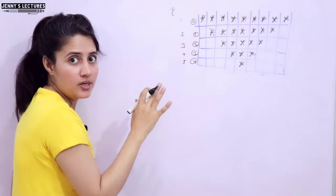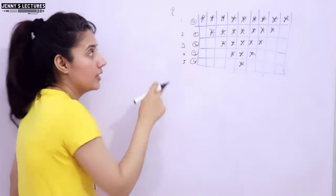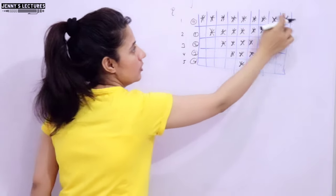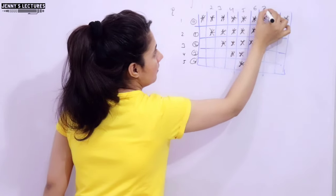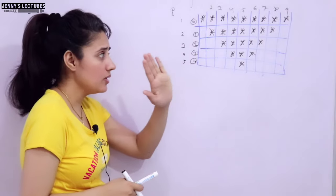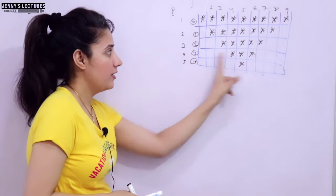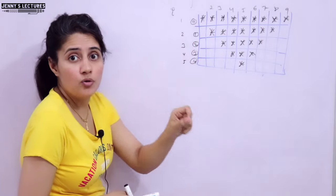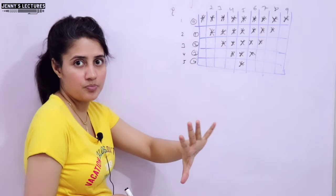The outer loop uses variable i, which is responsible for the rows. The j loop is responsible for the columns. Basically three loops are required: the outer loop handles the number of rows (the i loop), one inner loop prints the spaces, and the third inner loop prints the stars.